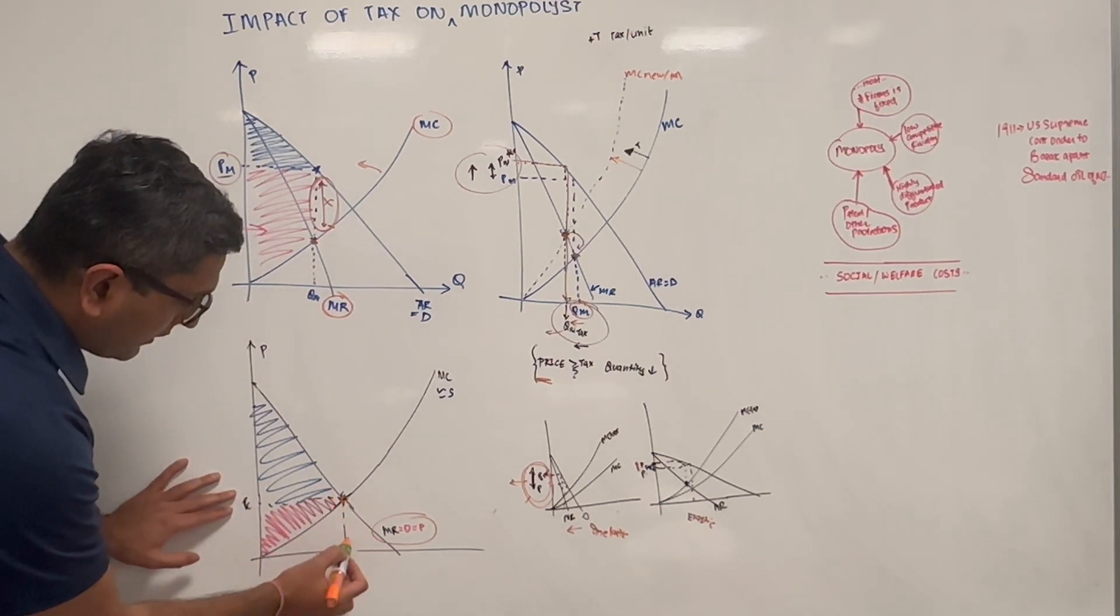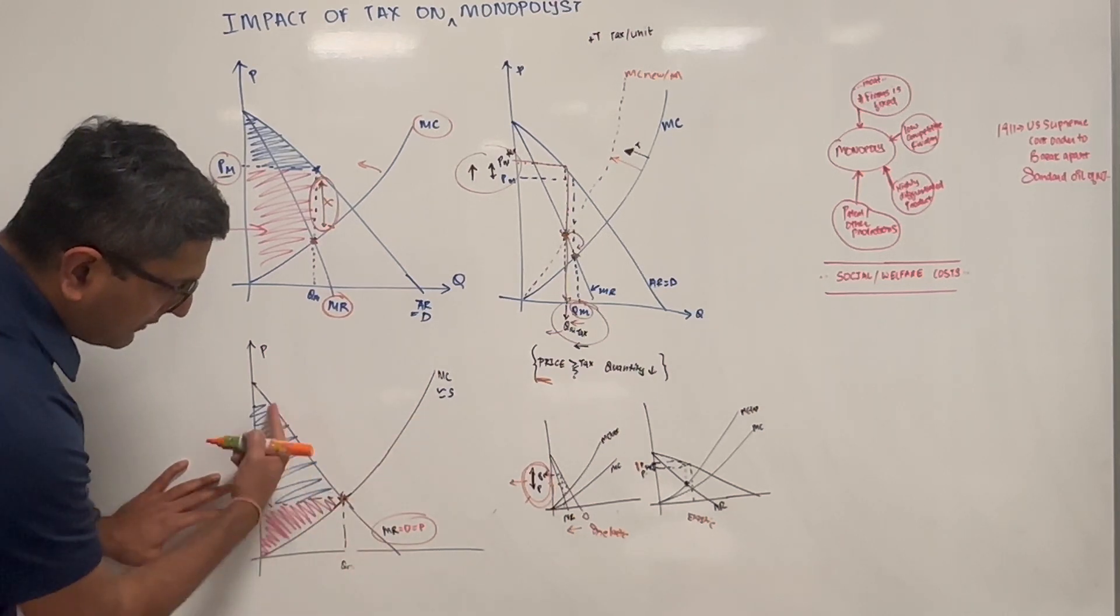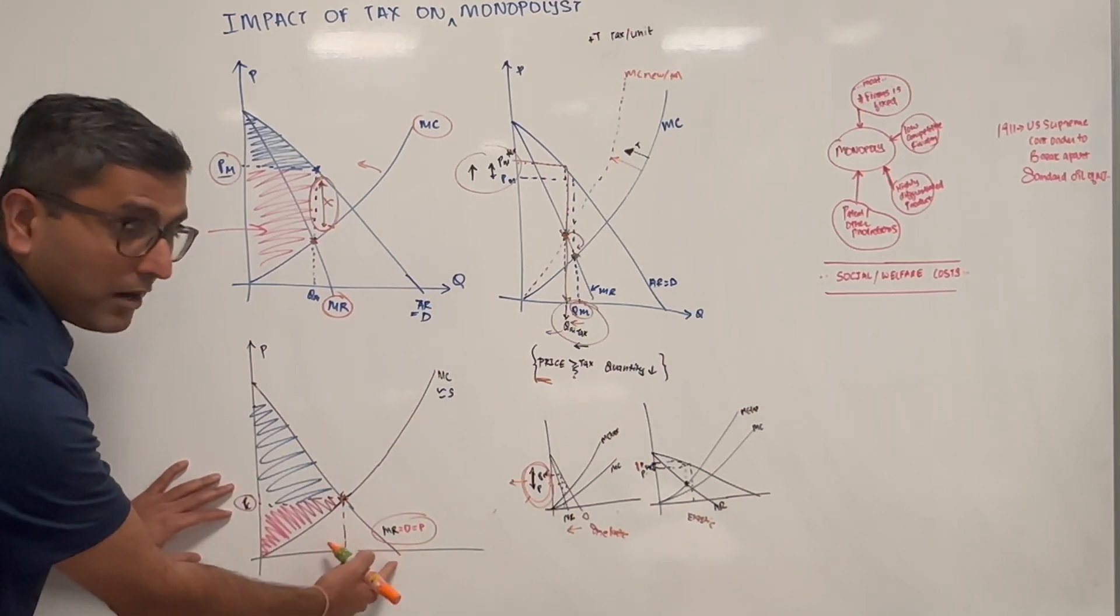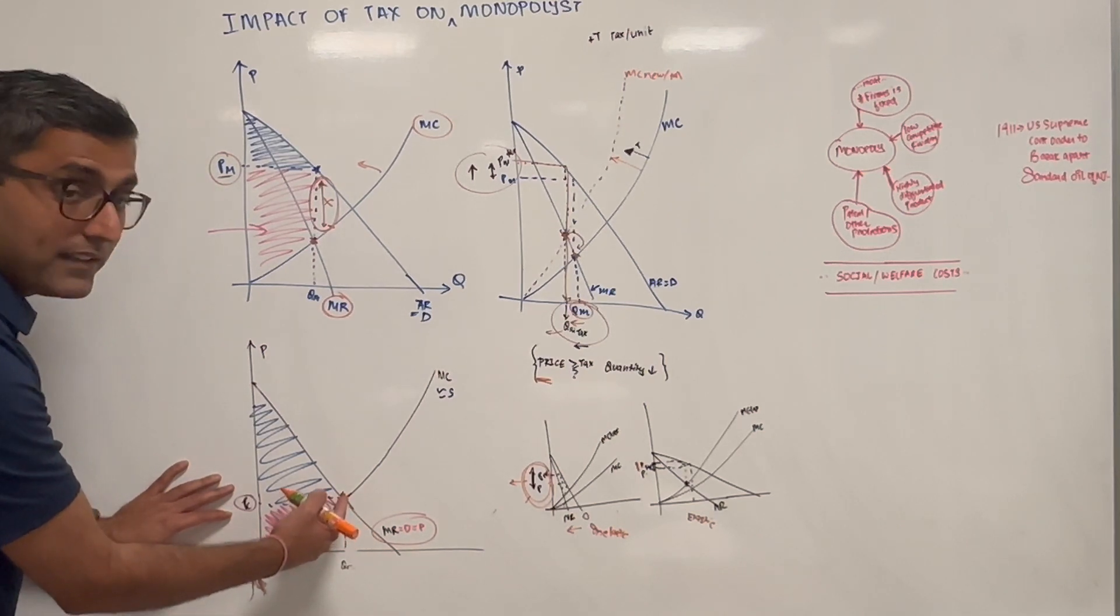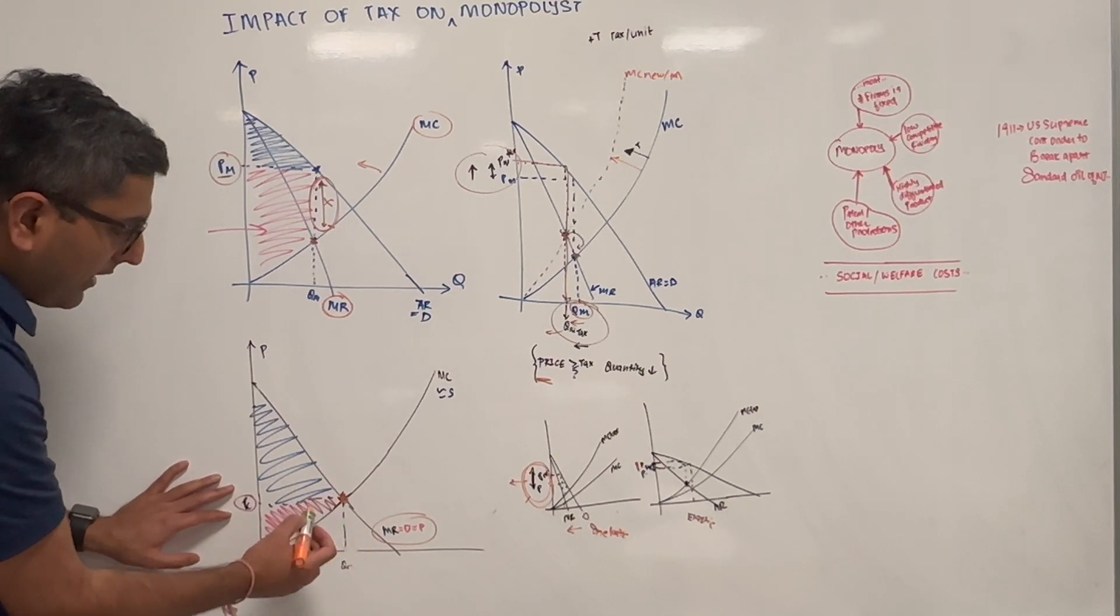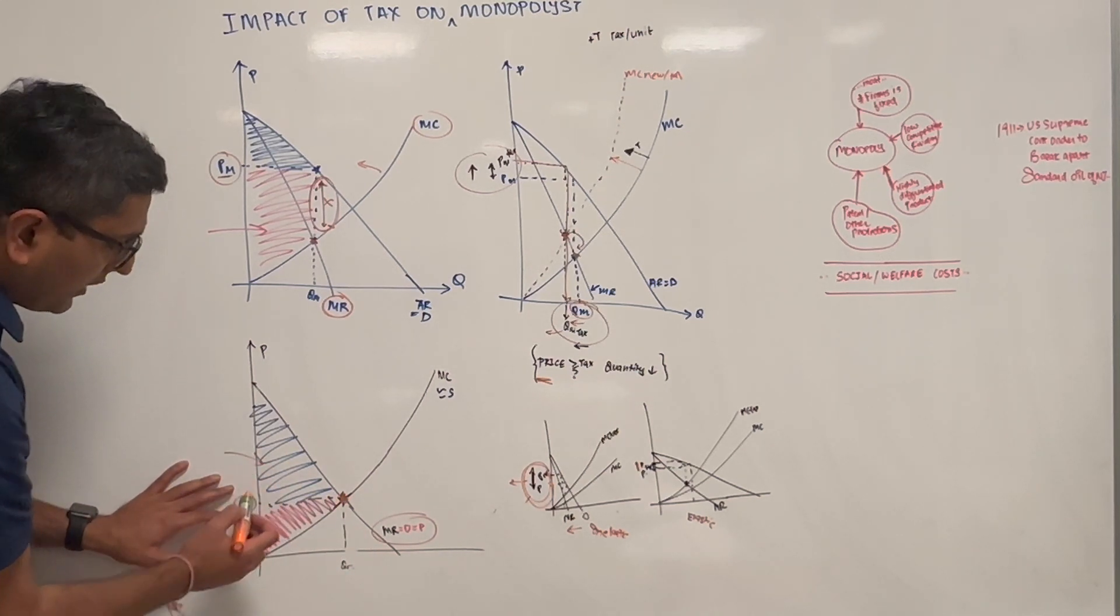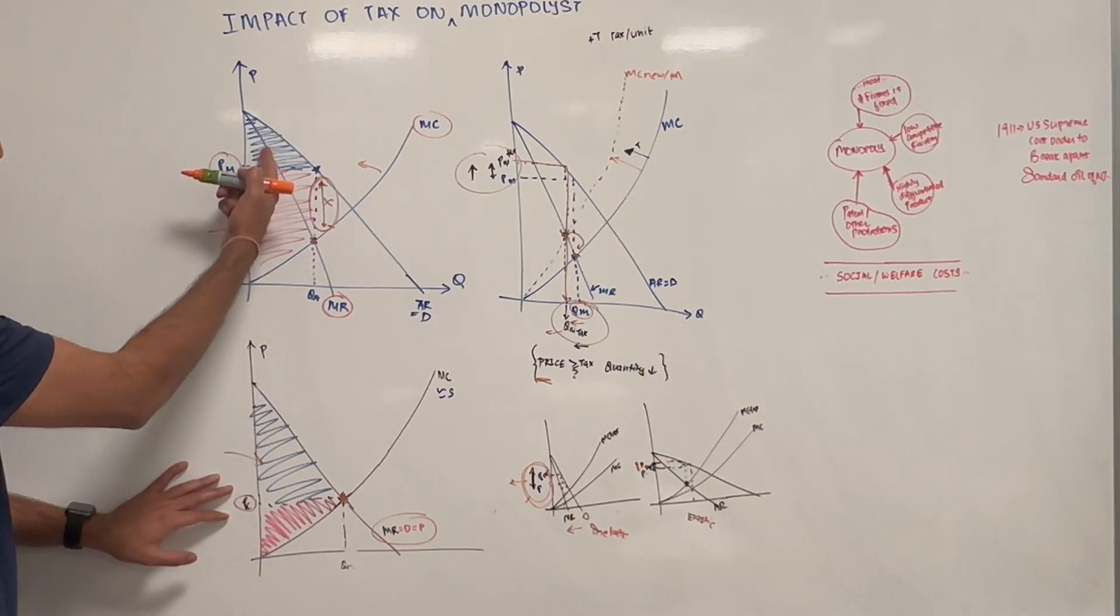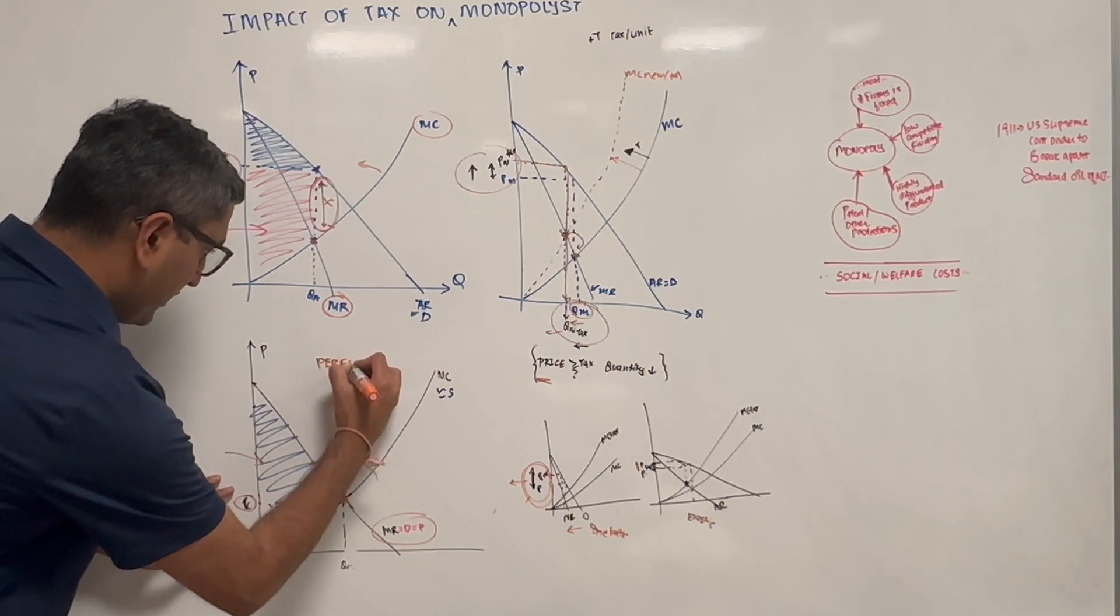Here the price is basically given, so MR and MC intersect. In this case, MR will be same as demand curve, same as the price. Whatever the market price is, the firm has to take it. In that case, the consumer surplus is much larger than what we see in a monopolist. This is perfect competition.